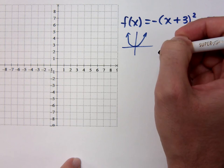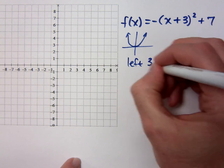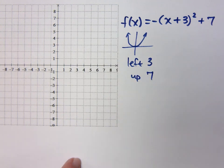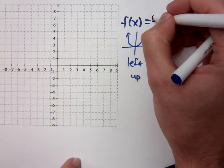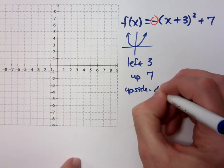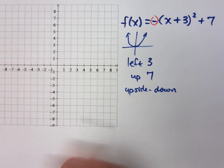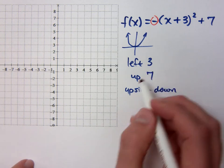What else do you know about it? It's up 7 to the left 3. So the vertex is left 3, up 7. Is there anything else you can tell me? The negative right here tells you that you're going to be upside down. So where is my vertex located? Negative 3, positive 7.